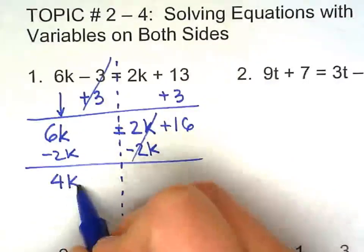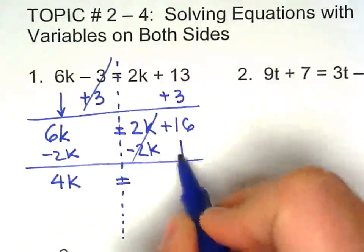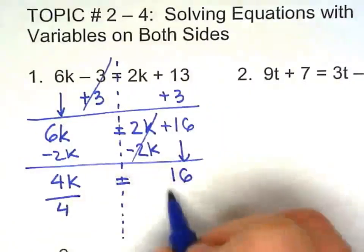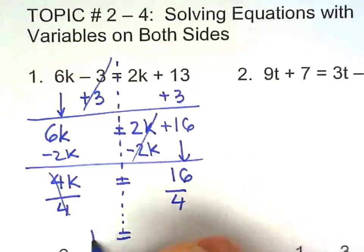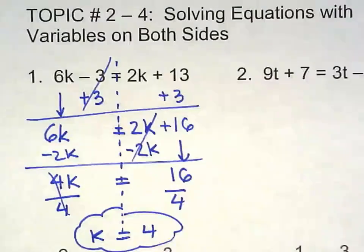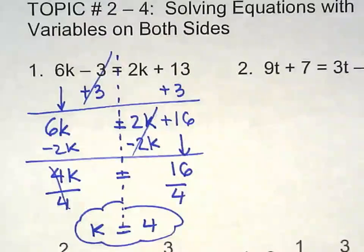6 take away 2 is 4. Bring 16 down. Now we just divide by 4. These two go bye bye, k is 4. Not bad.